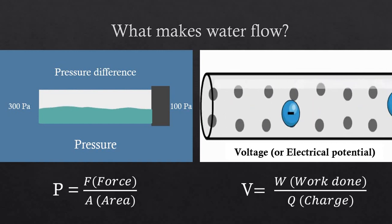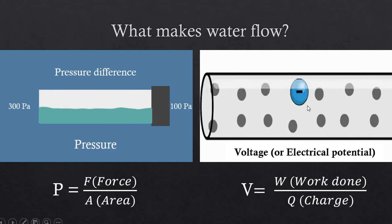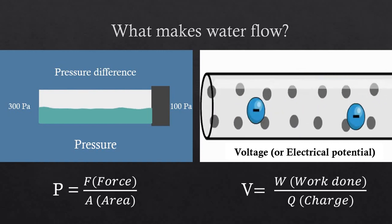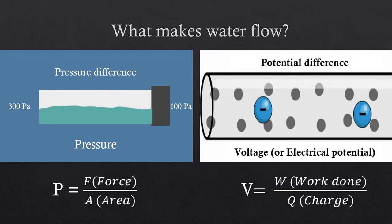The same for electrons. From one place to move to another place, there has to be a difference in terms of voltage or electrical potential. That's why we call it potential difference.